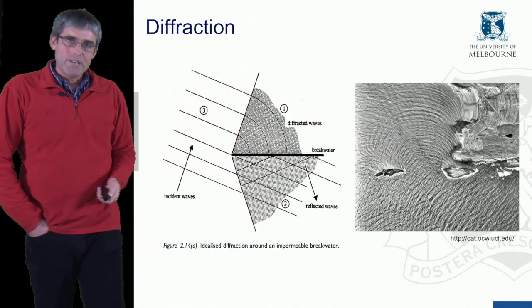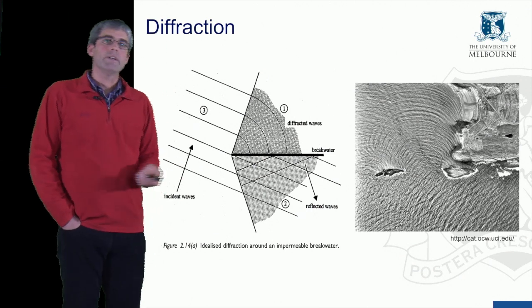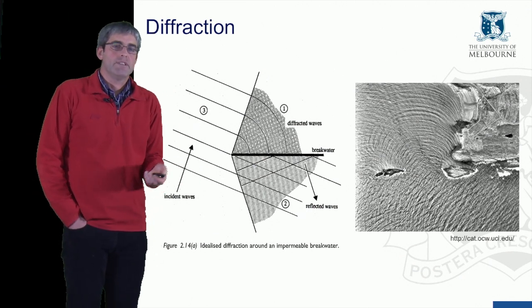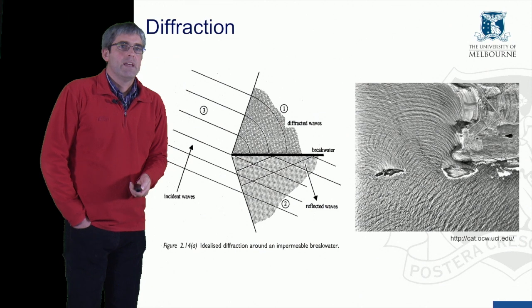So that's the four main transformations that occur as waves pass into the shallow zone, which are important, particularly because a lot of engineering structures are constructed in this zone.